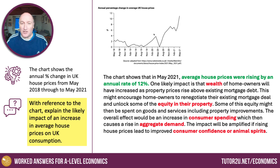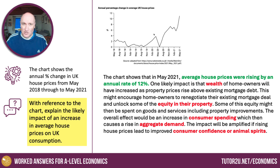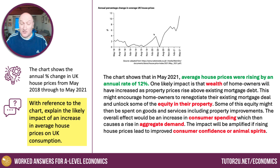The chart shows that in May 2021 average house prices were increasing by an annual rate of 12%. Straight away I get my application mark because I've used the data from the chart. One likely impact is that the wealth of homeowners will have increased because property prices are rising above people's existing mortgage liabilities — mortgage debt.